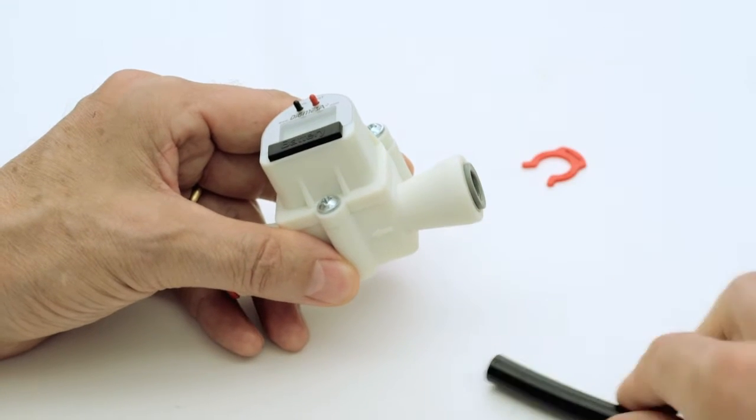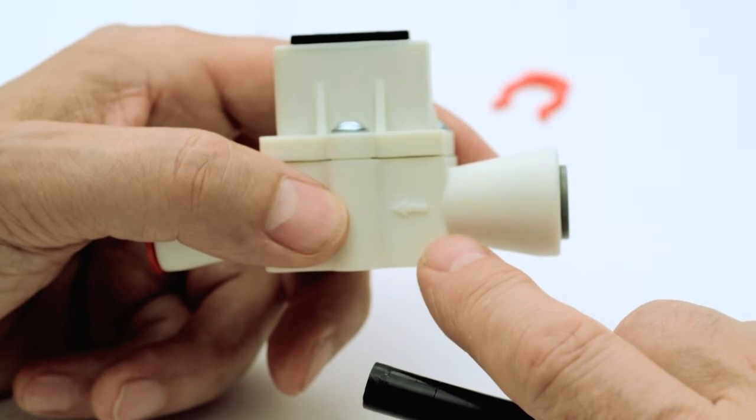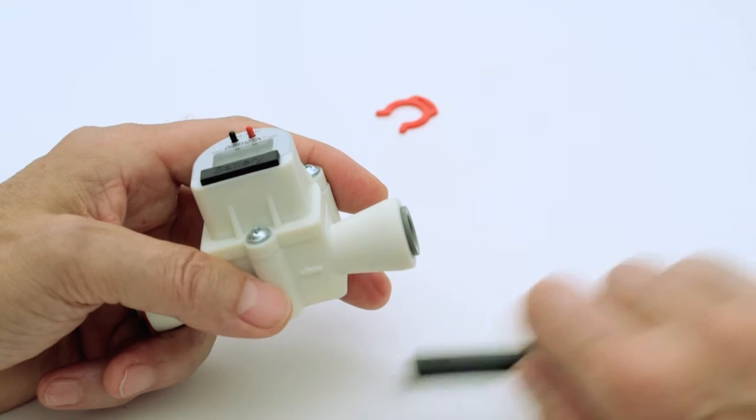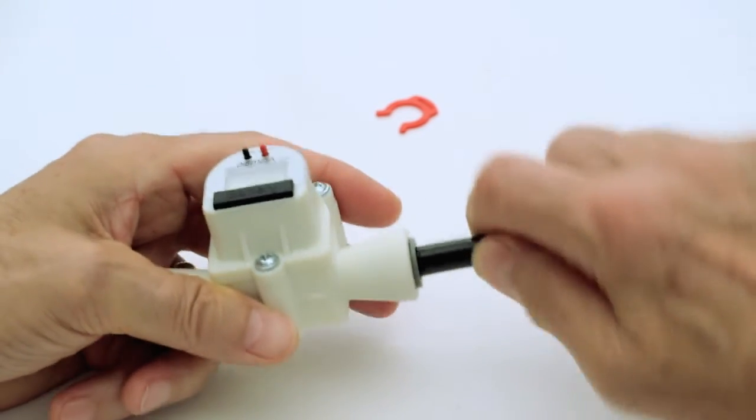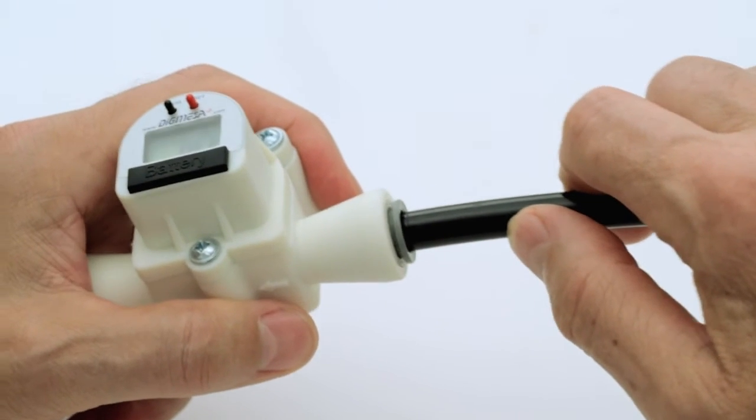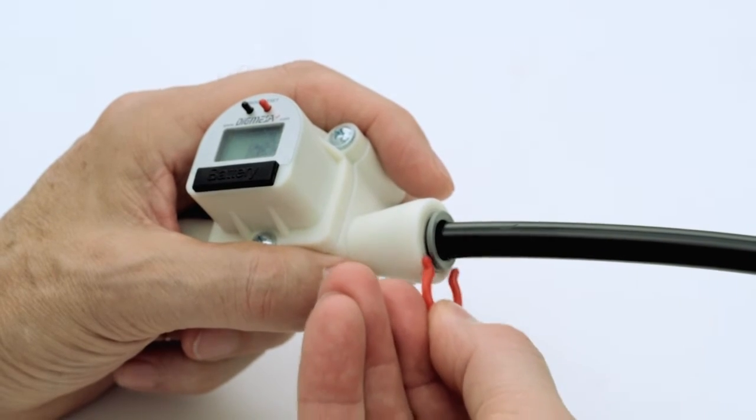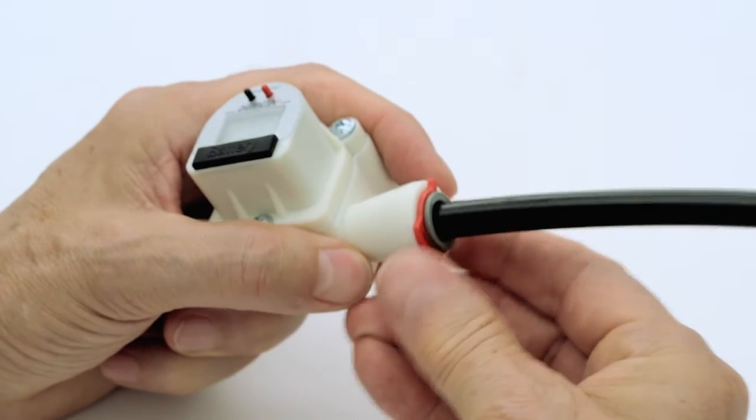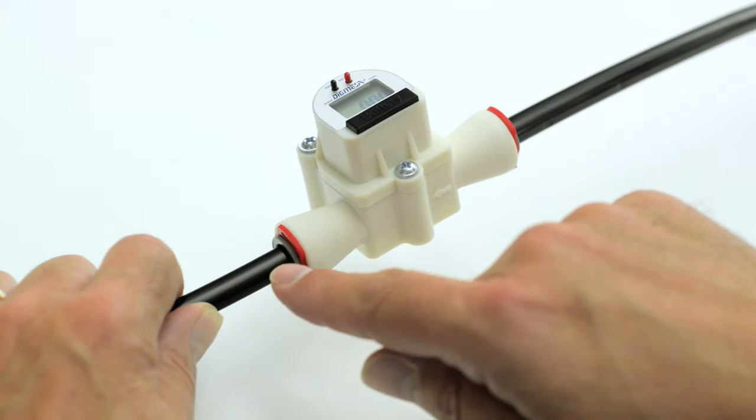Remove the red locking clip. In direction of flow, push the incoming hose end into the flow sensor nozzle inlet until it reaches the stop. To check that the hose is properly anchored, pull it in the opposite direction. Fit the locking clip. Repeat the procedure for the second connection.